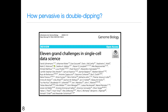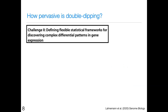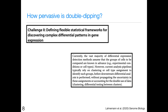This is a very pervasive problem. A review article published in Genome Biology in 2020, grandiosely entitled '11 Grand Challenges in Single-Cell Data Science,' states in challenge number two that the vast majority of differential expression detection methods assume the groups of cells to be compared are known in advance. However, current analysis pipelines typically rely on clustering to identify such groups without propagating the uncertainty in these assignments or accounting for the double use of data. This is a well-understood problem, but people can write a review article saying it's a problem without posing a solution — and so we're going to try to bridge that gap.